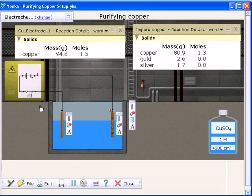Here we can see the mass of the pure copper electrode increasing as the mass of the impure copper electrode is decreasing.